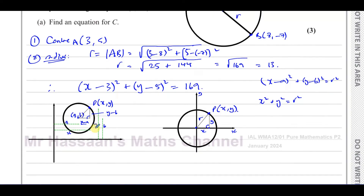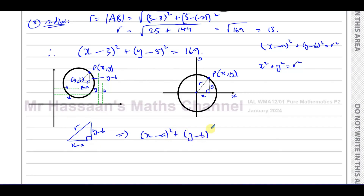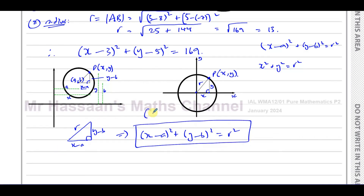So the sides of our triangle are (x minus A) and (y minus B), and the hypotenuse is the radius of the circle. So we can say (x minus A) squared plus (y minus B) squared equals r squared. And that is the formula for the equation of a circle centered at point (A, B) with radius R. That's where it comes from.